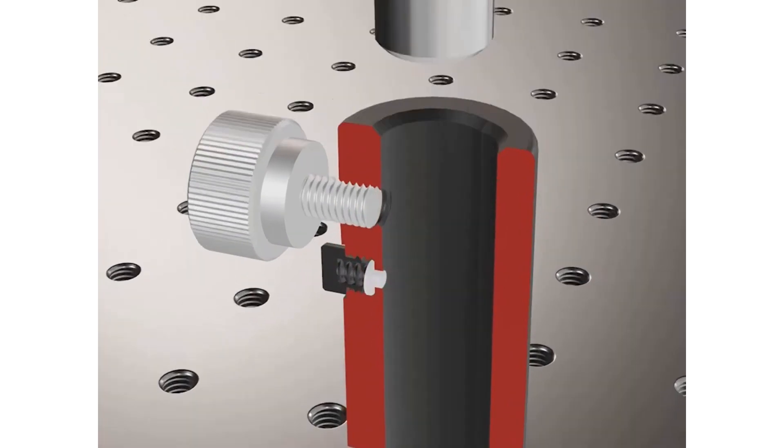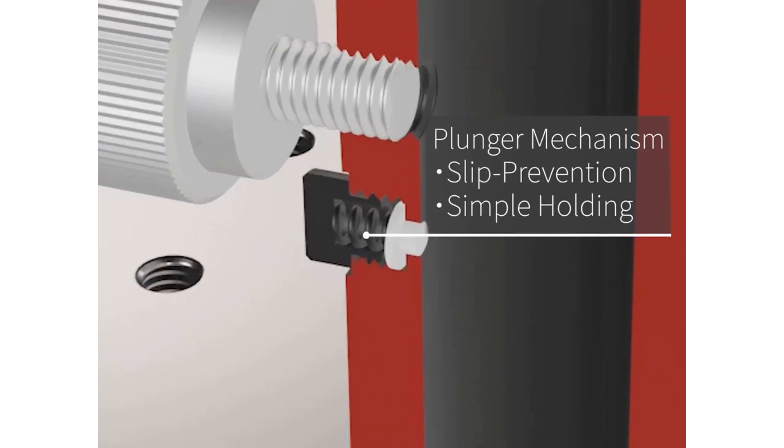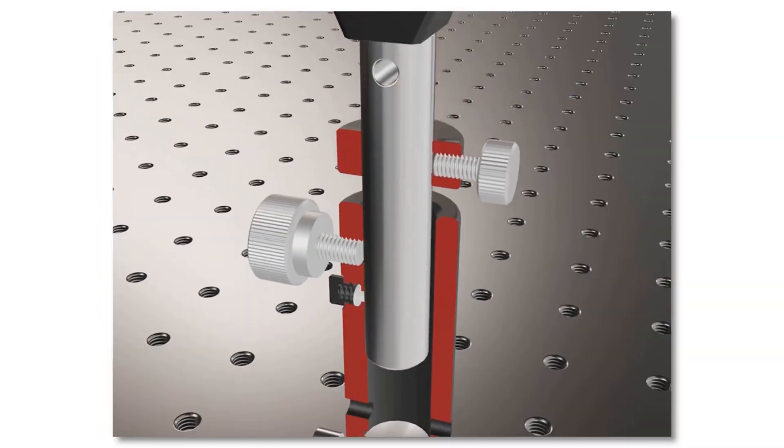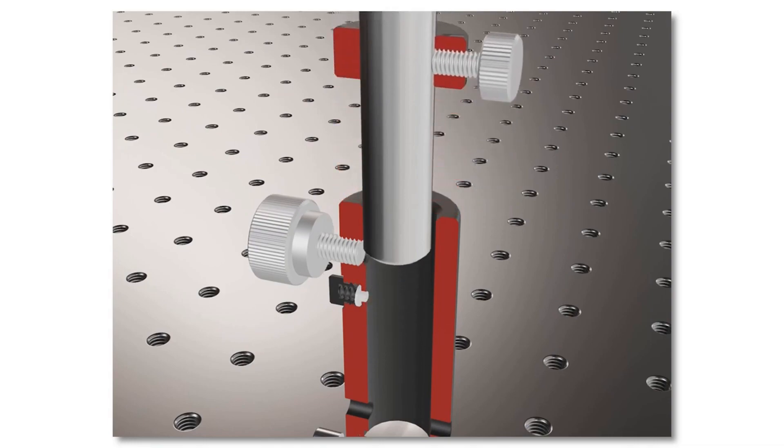This mechanism ensures that the post-mounted optic will never drop, even when the main clamp screw is loosened. We'll take a closer look at the internal view of this plunger mechanism, where the details of the automatic post slip prevention can be easily visualized.